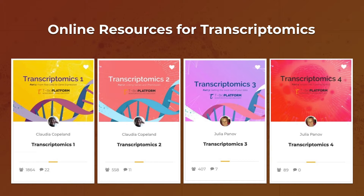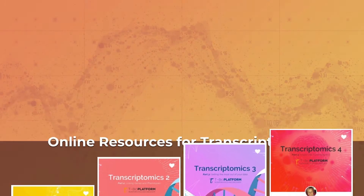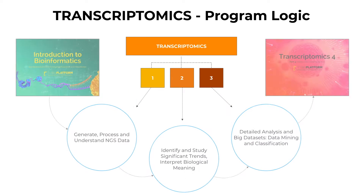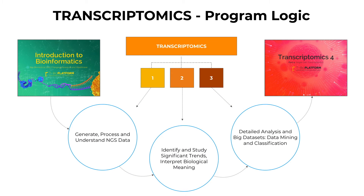Let's talk about how these modules are designed and how they can be used to help students learn about RNA-seq. In the program, we will require students to complete three main courses: Transcriptomics 1, 2, and 3. There are also two optional courses: Introduction to Bioinformatics and Transcriptomics 4.